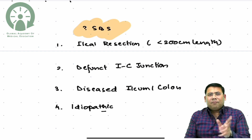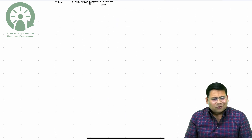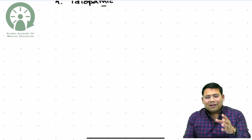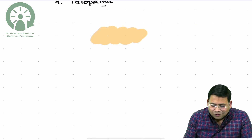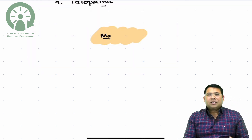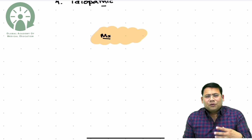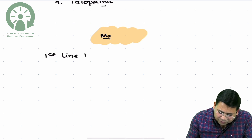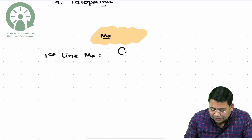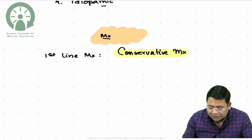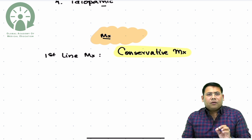Now let us understand the management of Short Bowel Syndrome. Many people think surgical management should be first line — it is not. The first line management is always conservative management. This conservative management is based on one property of the intestine known as adaptive compensation.